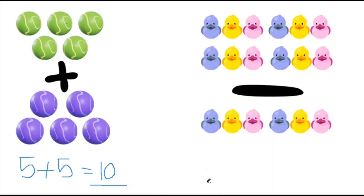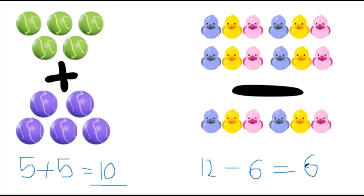Now let's count the ducks. One, two, three, four, five, six, seven, eight, nine, ten, eleven, twelve. Twelve ducks minus one, two, three, four, five, six. Twelve ducks minus six ducks will give us six ducks.